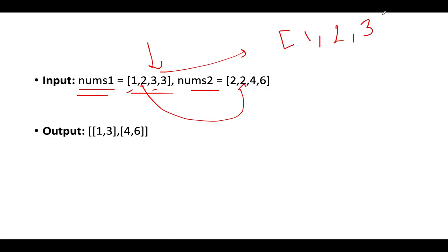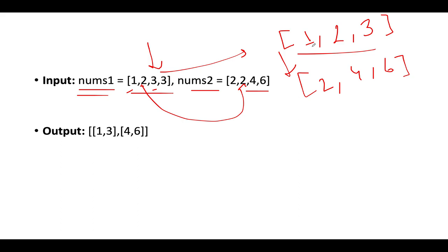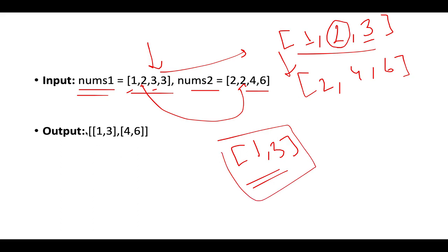Set two becomes {2, 4, 6}. Now iterate over each element of set one and check whether that element is part of set two. The first element is one — is one part of set two? No, so one gets added to the first element of our answer. Next we see two — it is part of set two, so we skip it. Next is three — it is not part of set two, so it becomes part of our answer.